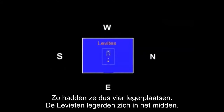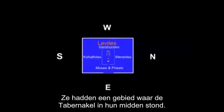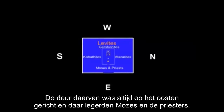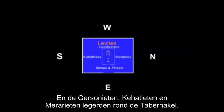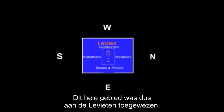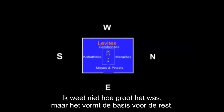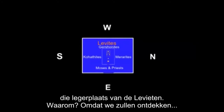The Levites are camped in the middle. They set out an area where they set up the tabernacle in the middle, and the doorway is always to the east — that's where Moses and the priests were camped. The Gershonites, Kohathites, and Merarites camped around the tabernacle, but the whole area was the area assigned to the Levites. That's going to be the basic unit we're going to deal with here — the camps of the Levites.